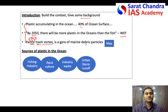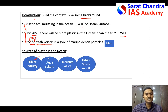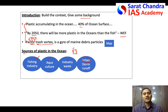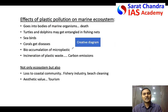Though the question doesn't specifically ask about sources of plastic, it's good to write one point about where it comes from. The major sources are the fishing industry, fishing nets, aquaculture, industrial waste, and plastic used in cities that enters the ocean through urban storm runoff. Mentioning these points helps package the answer better, making it easier for the evaluator to follow.